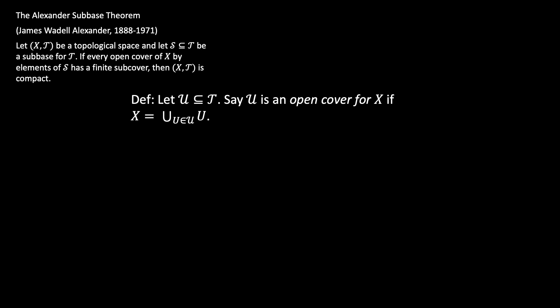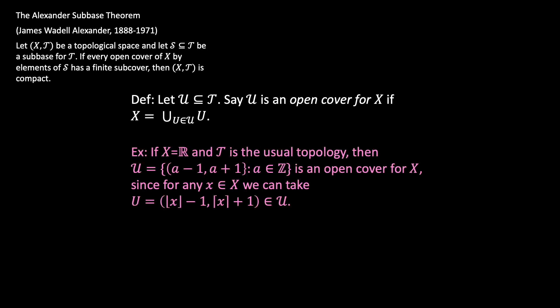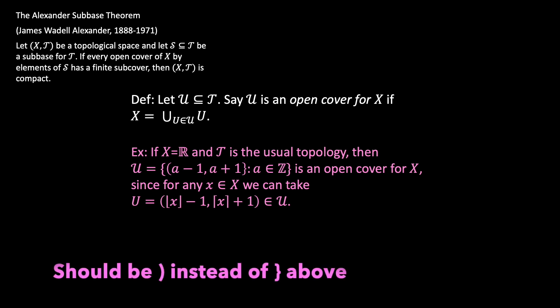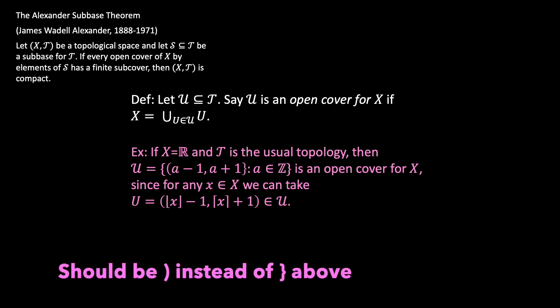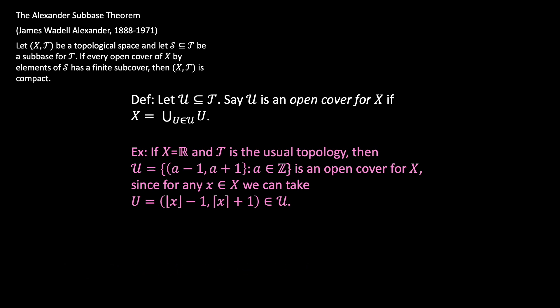Now let script U be a subset of T — just some collection of open sets. We'll say that U is an open cover of X if X equals the union of all the elements U in script U. For example, if X is the real line and T is the usual topology, then we could take script U to be all the open intervals (A−1, A+1) where A is an integer — open intervals centered at an integer.